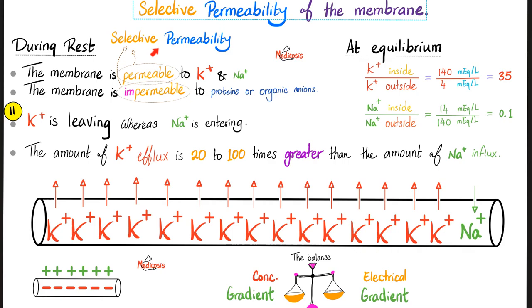What causes the resting membrane potential — the negative 90? Two things: selective permeability of the membrane to sodium and potassium (specifically potassium), and the sodium-potassium ATPase pump. The membrane is permeable to potassium and sodium but impermeable to others. Potassium is leaving during rest, making the inside more negative. Sodium moves in during rest, but it is minuscule compared to the potassium efflux — 20 to 100 times less. Potassium leaves because inside concentration (140) greatly exceeds outside (4) — 35 times more inside. Sodium has the opposite gradient: 140 outside, only 14 inside, 10 times more outside, leading to sodium influx.